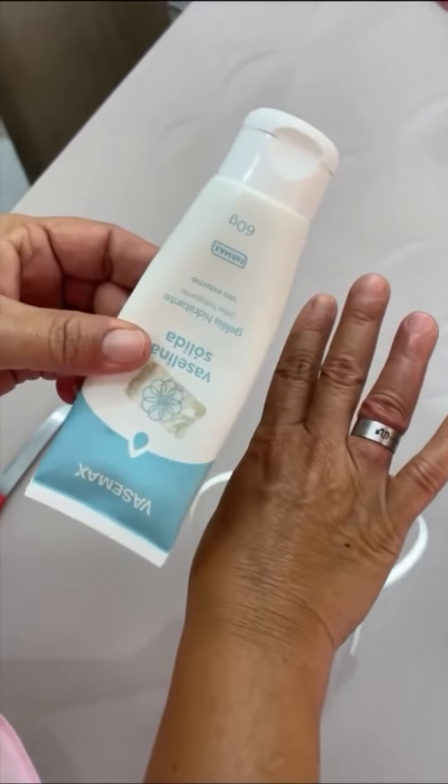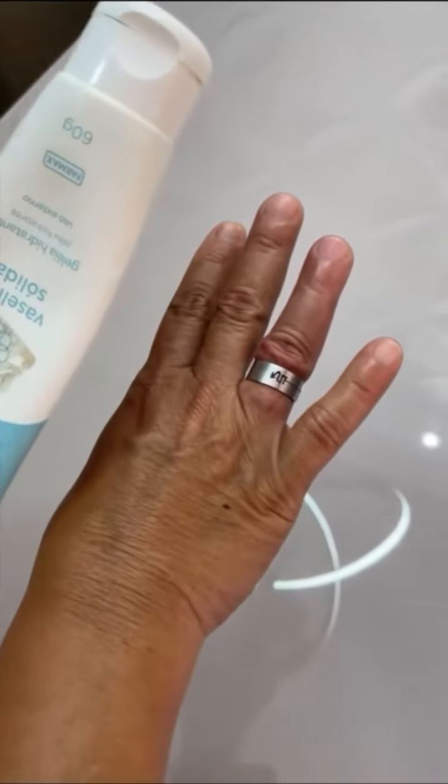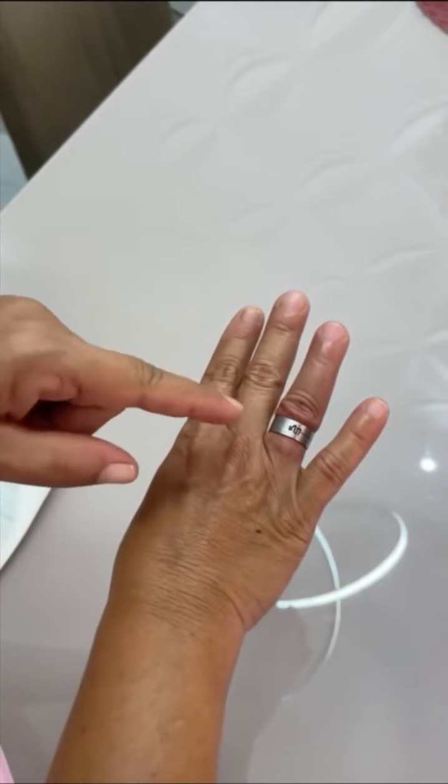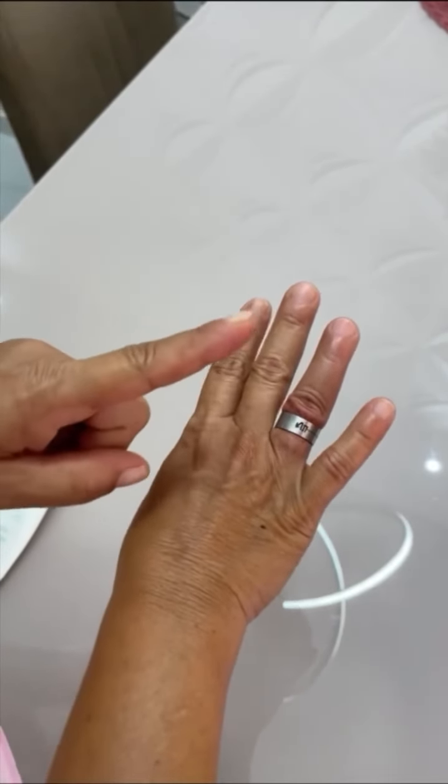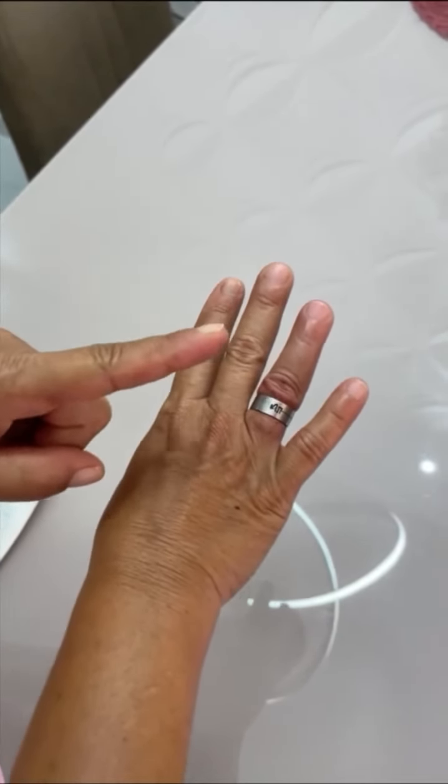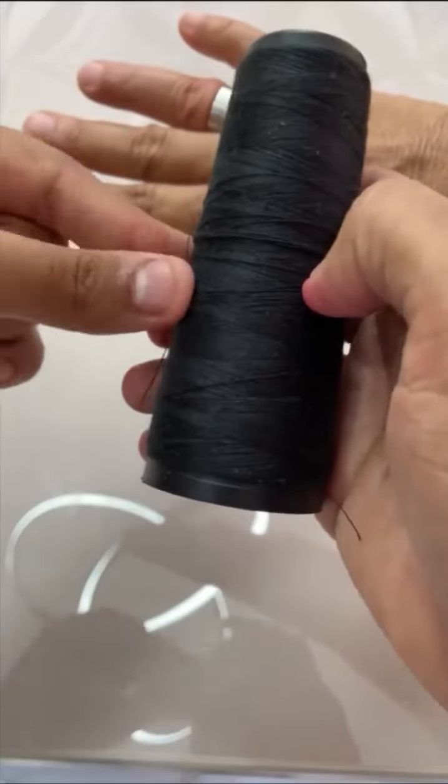Many people also use cream or Vaseline. However, when the ring is stuck and your finger is swollen, this won't help you remove it either. A doctor taught me how to remove it in a simple and easy way.